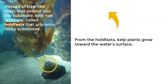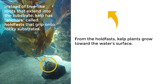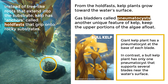Instead of tree-like roots that extend into the substrate, kelp has anchors called holdfasts that grip onto rocky substrates. From the holdfasts, kelp plants grow toward the water's surface. Gas bladders called pneumatocysts, another unique feature of kelp, keep the upper portions of the algae afloat. Giant kelp has a pneumatocyst at the base of each blade. In contrast, a bull kelp plant has only one pneumatocyst that supports several blades near the water's surface.